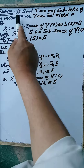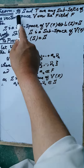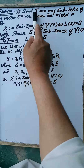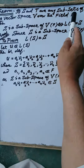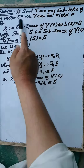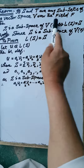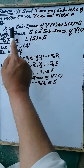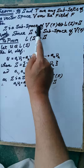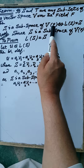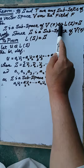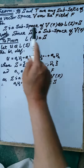Bismillahirrahmanirrahim. A theorem: if S and T are any two subsets of the vector space V over the field F, then S is a subspace of the vector space V over the field F if and only if the linear span of the set S is equal to the set S.